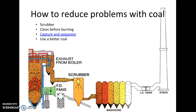Another thing you can do is literally clean the coal before you burn it — spraying it down takes care of some of the particulate matter. We'll also see a video on carbon capture and sequestration. The last option is to use a better coal — if you have anthracite, use anthracite, since it has a lot of energy content, you don't have to burn as much, and there are fewer waste products. The problem is our most abundant coal is bituminous, which is not as clean as anthracite.